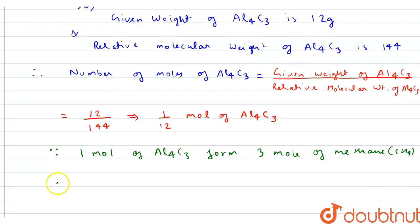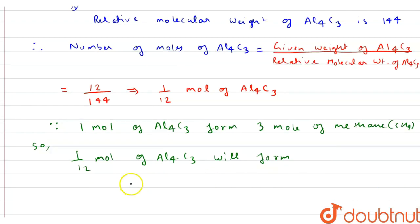So, 1 by 12 mol of Al4C3 will form 1 by 4 mol of CH4.